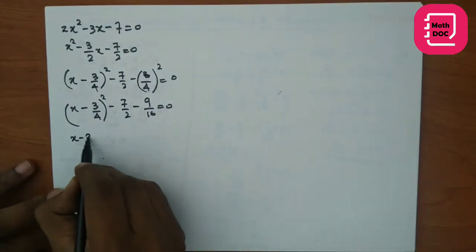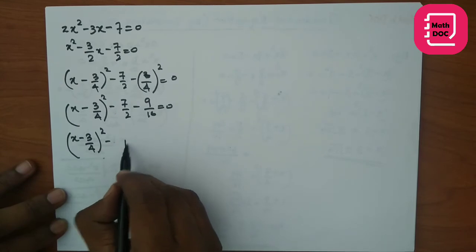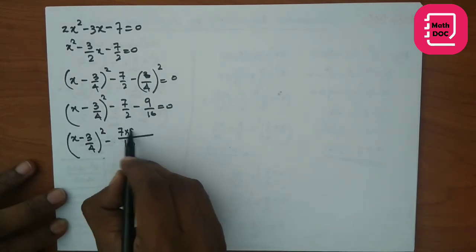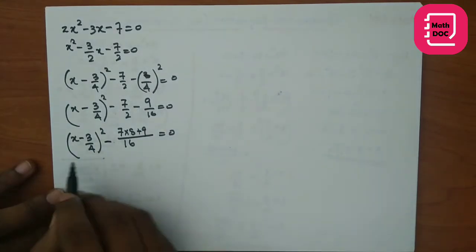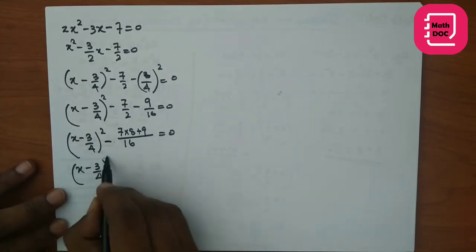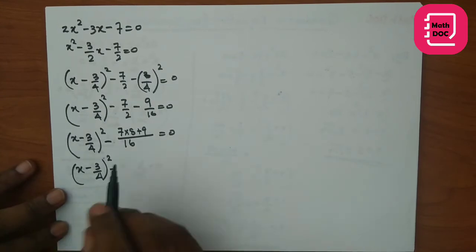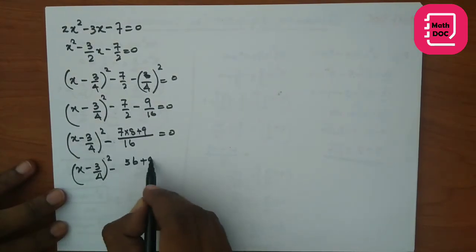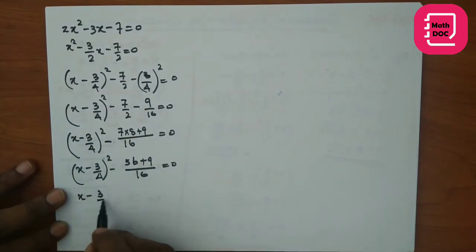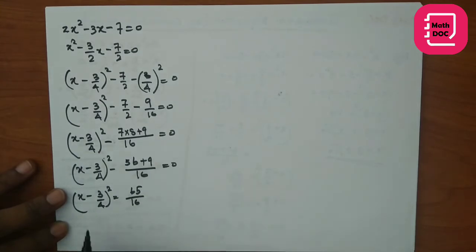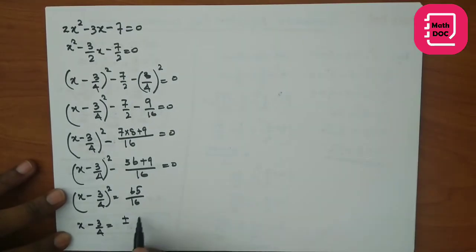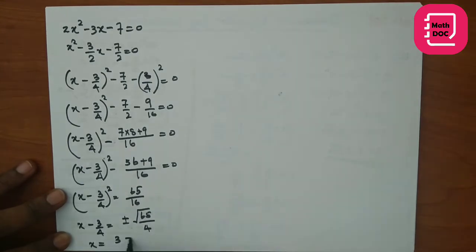Setting this equal to 0 and simplifying: (x - 3/4)² = 7/2 + 9/16. With common denominator 16: 7×8 = 56, so 56 + 9 = 65. Therefore (x - 3/4)² = 65/16. Taking square roots: x - 3/4 = ±√65/4, giving x = 3/4 ± √65/4.